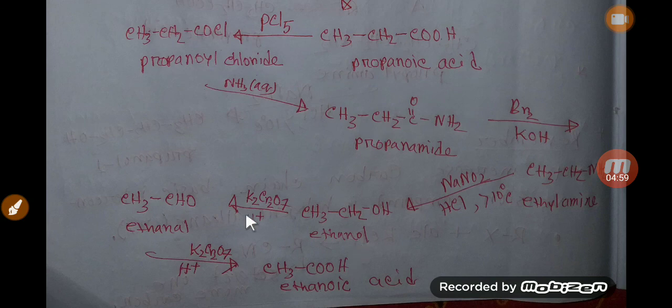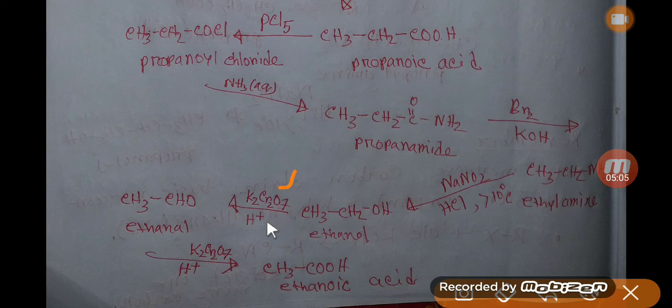If you oxidize this ethanol by potassium dichromate and sulfuric acid, then at first we will get ethanol, and this process will continue, and at last you will get ethanoic acid. Ethanoic acid has two carbons.